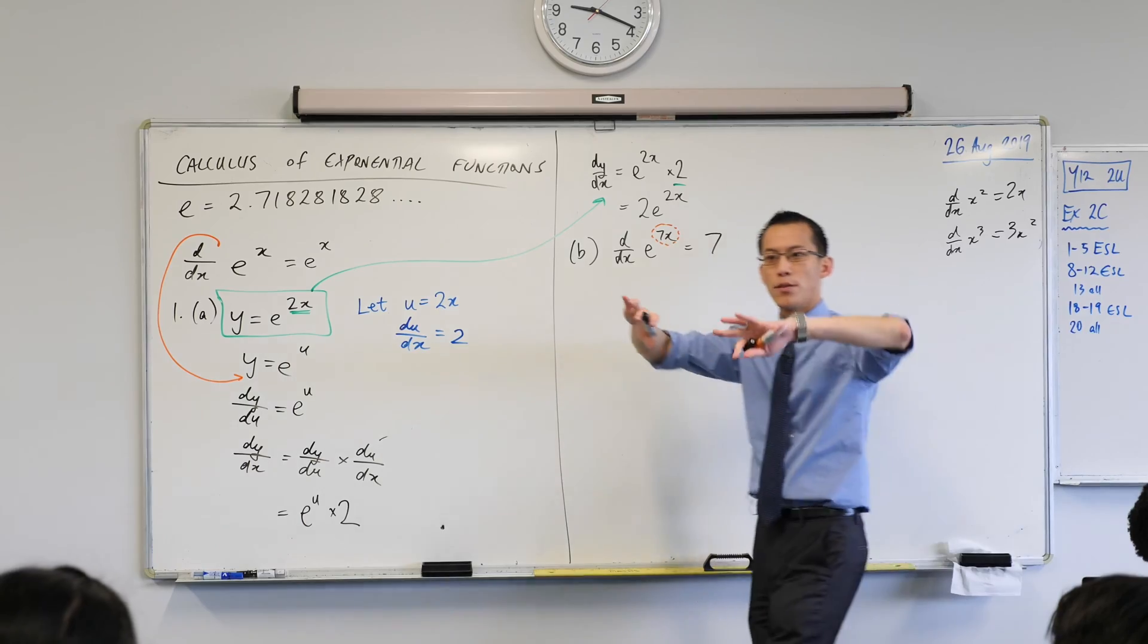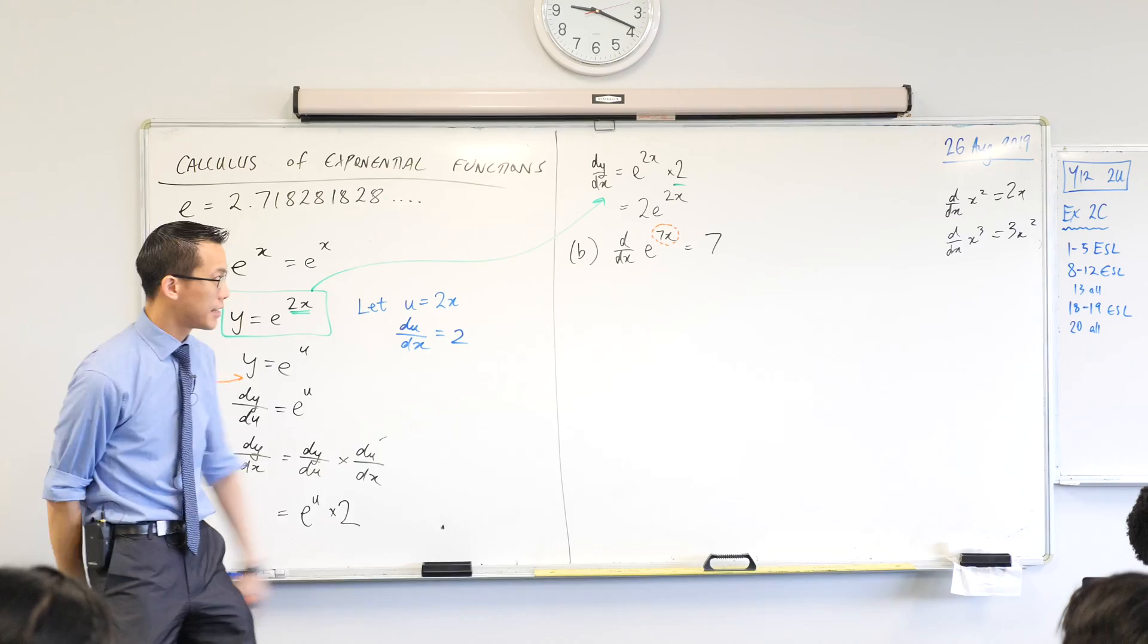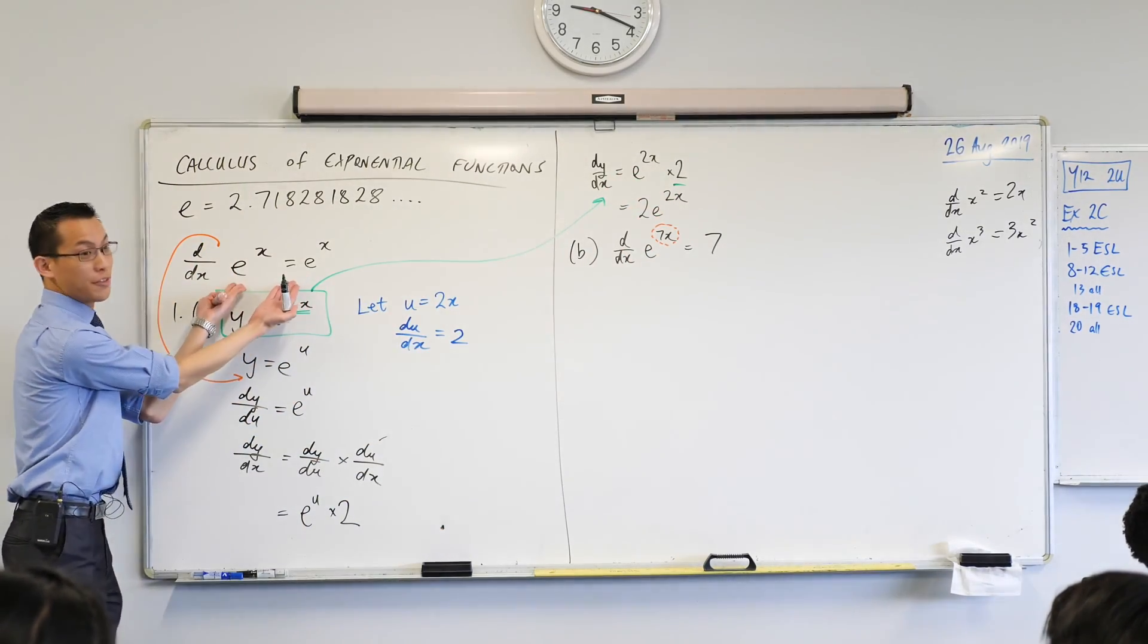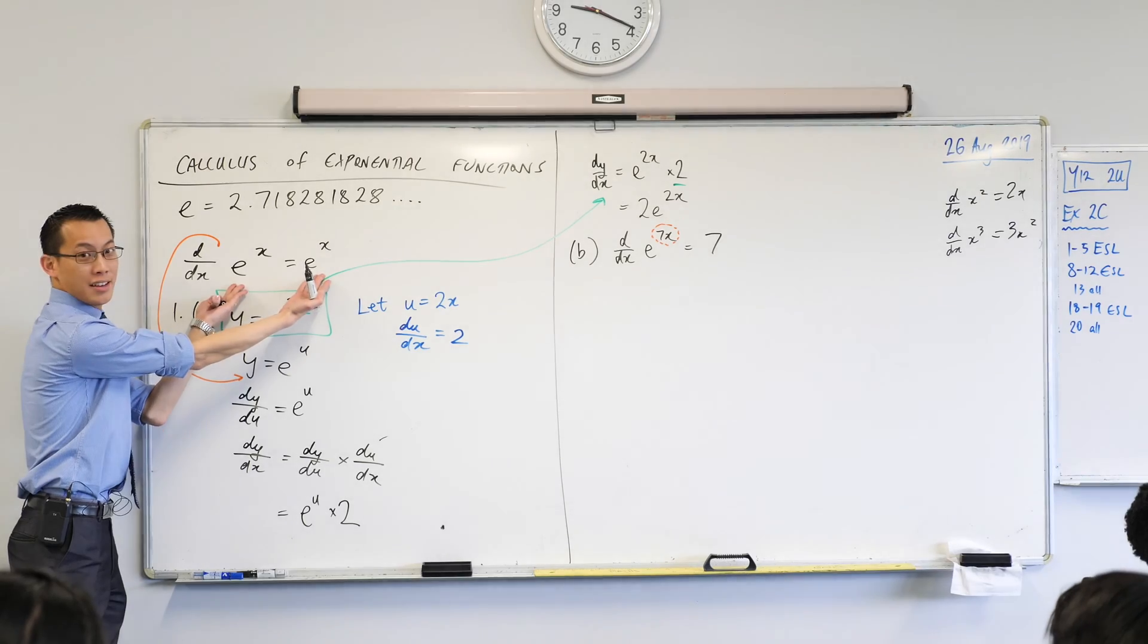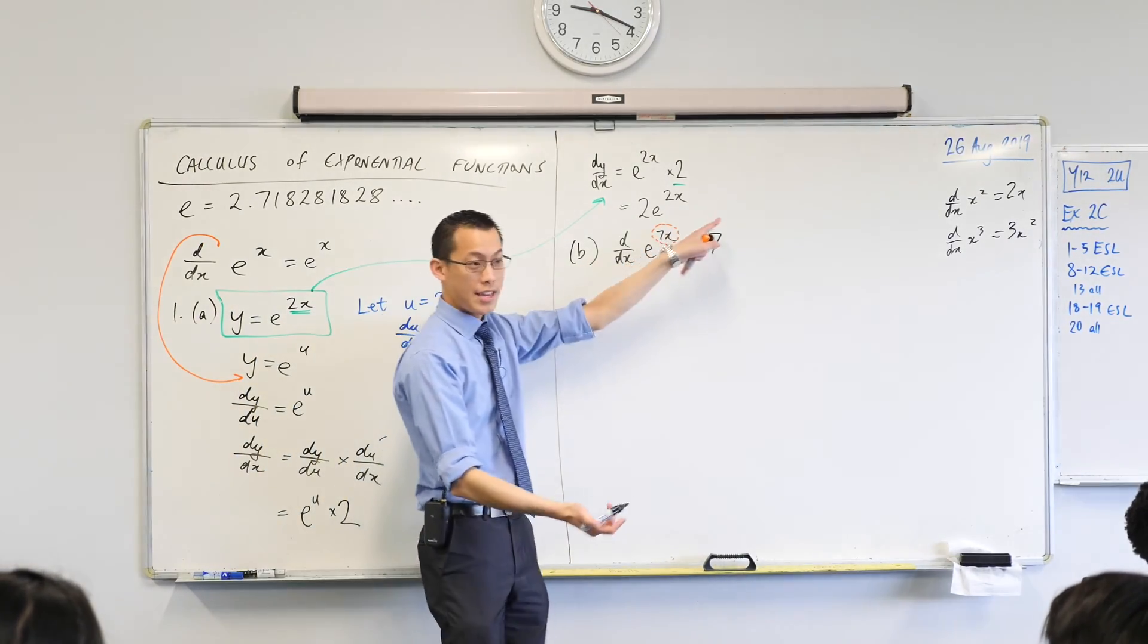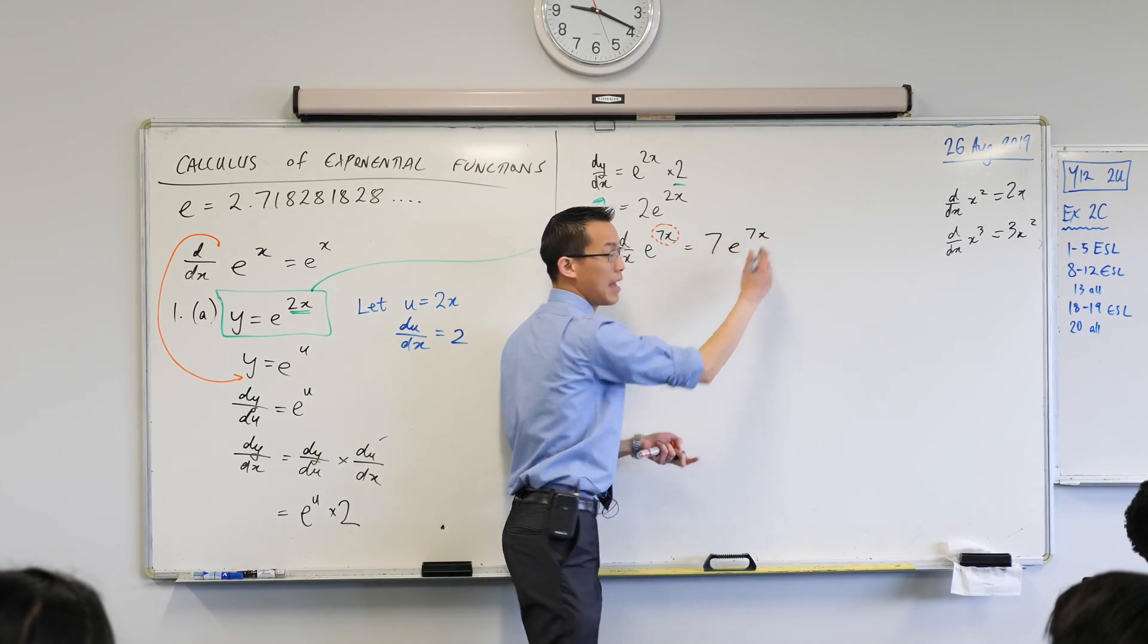Then I think about the derivative of the outside. What is the outside function in this case? It's e to the power of a thing. What have we established happens when you differentiate e to the power of a thing? No change at all. So that e to the power of a thing becomes e to the power of that thing and you're done.